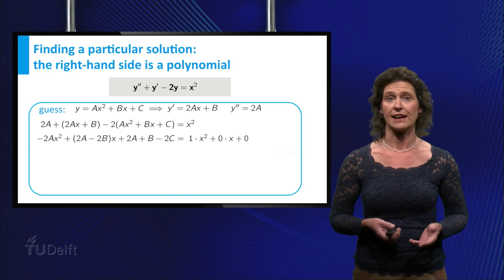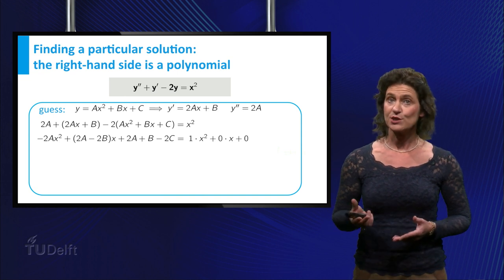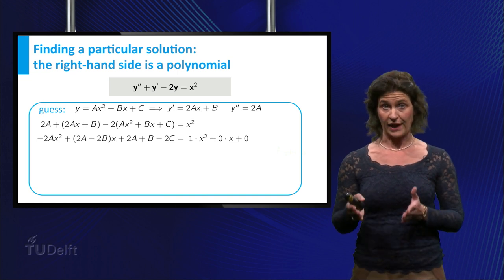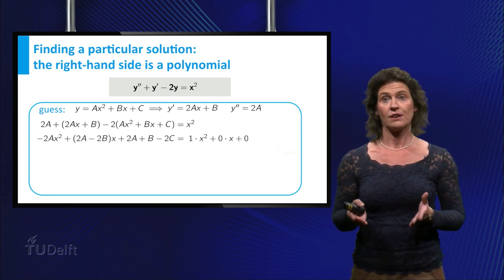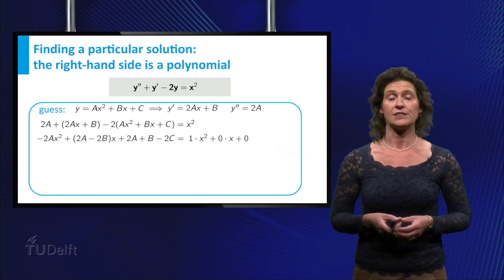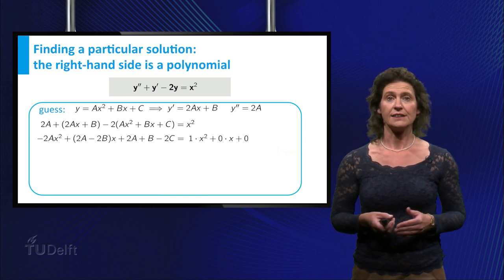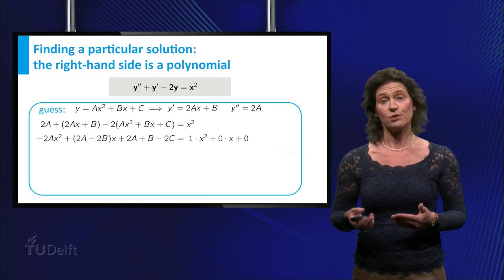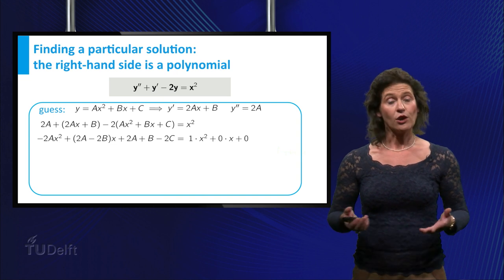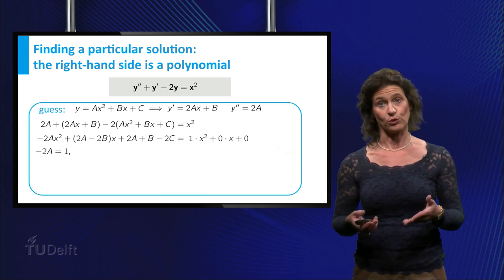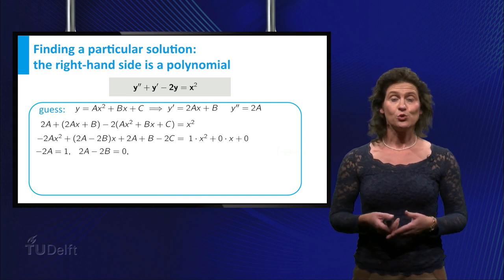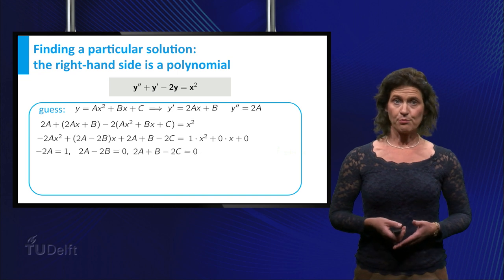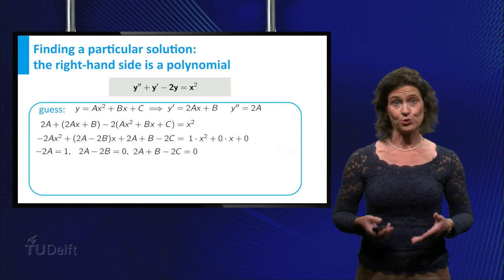The function on the left-hand side and the function x squared are equal if and only if the coefficients of the powers of x are identical, thus if in the rewritten equation the left-hand side equals 1 times x squared plus 0 times x plus 0. In other words, minus 2a has to be equal to 1, 2a minus 2b has to be equal to 0, and 2a plus b minus 2c has to be equal to 0.